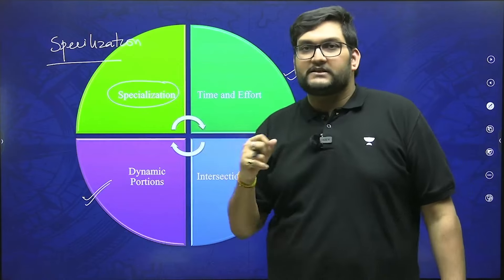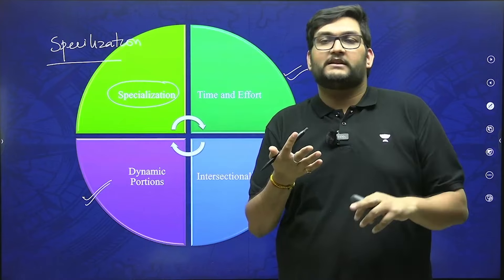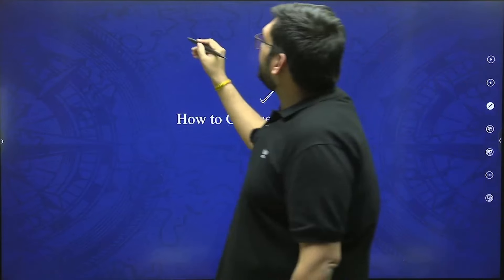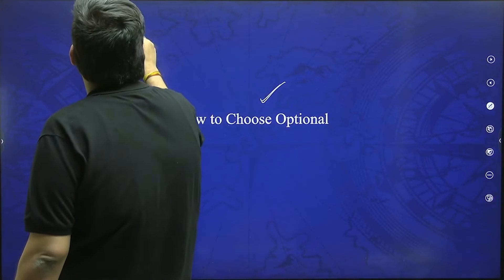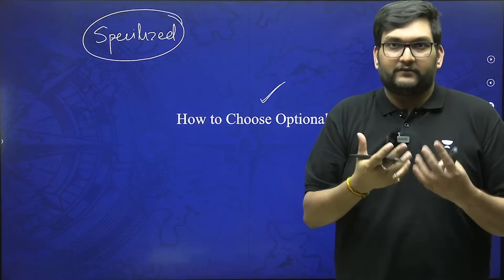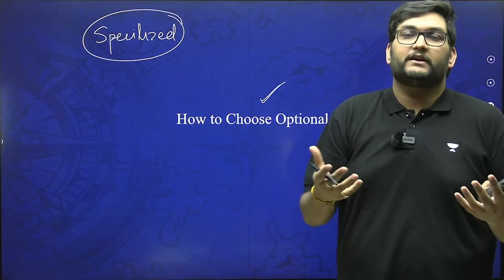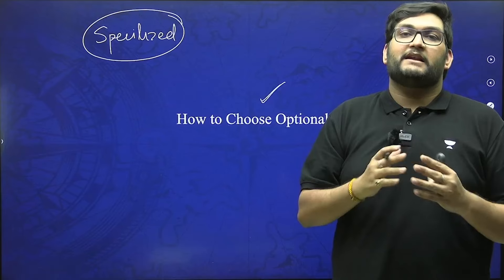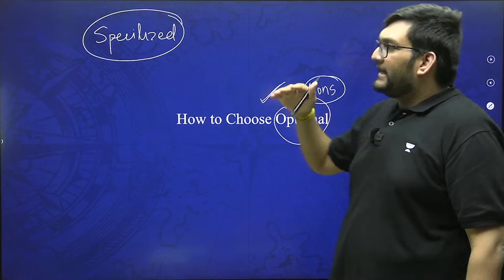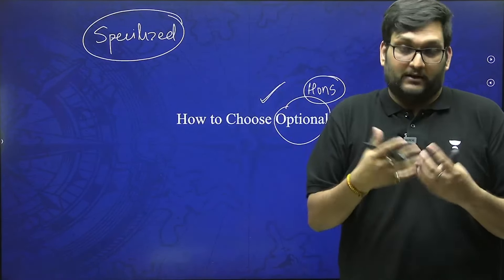When we talk about specialization, there are two types of optionals. The first type is based on specialization: maths, statistics, economics, physics, chemistry. These are very specific and very specialized optionals — not everybody can take them. Maths is the most scoring, but it is very difficult because UPSC explicitly mentions that optionals are always at honours level. So you should be at BSc level for physics, chemistry or mathematics, and BA Honours level for economics.